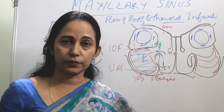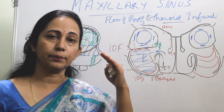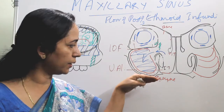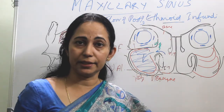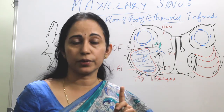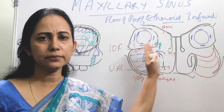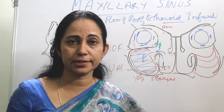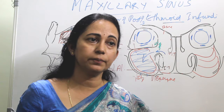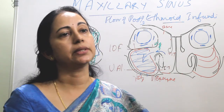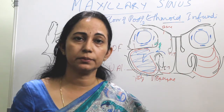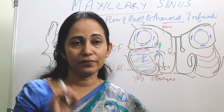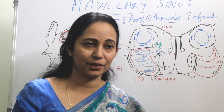To summarize, in this class we covered the osteology and relations of the maxilla, the importance of the infraorbital nerve at the roof, the relationship with teeth and risk of oro-antral fistula at the floor, and the natural ostium on the medial wall — its relations, opening into the ethmoid infundibulum, and methods to identify the natural ostium during endoscopic sinus surgery.